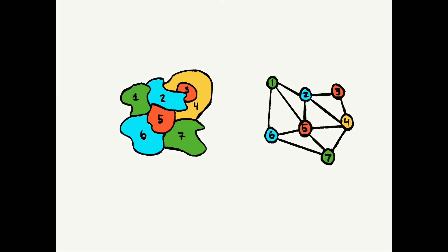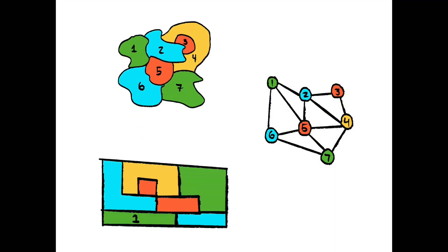If two countries touch each other, we connect their vertices together with a link. It is much easier to interpret this graph structure, and we can even see how different maps can yield the same networks.